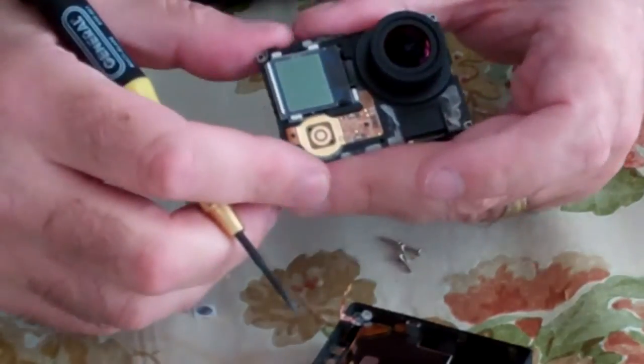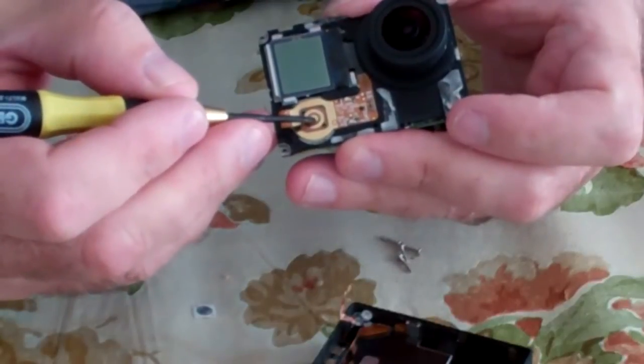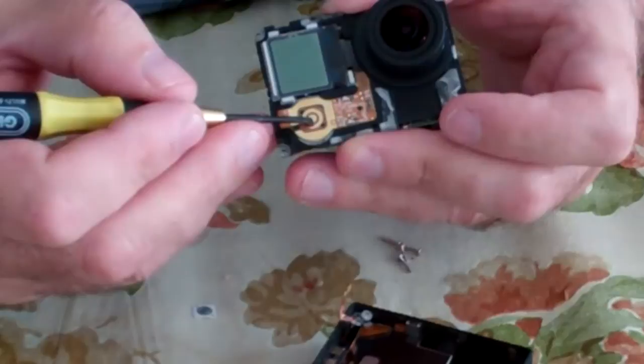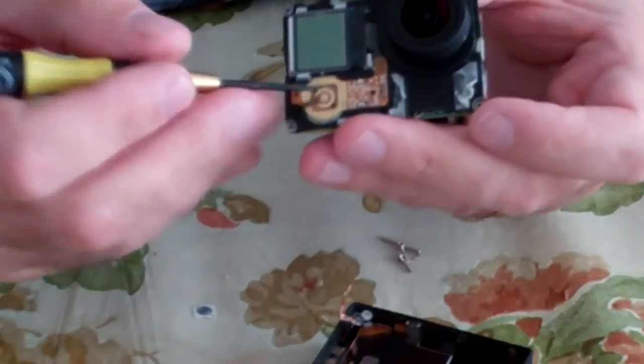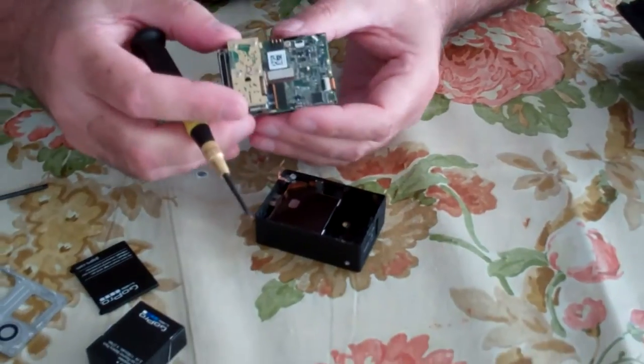We're going to wire a third wire to the center of the power switch button right here. And we're also going to route it out the same side that we're going to route our two microwires.